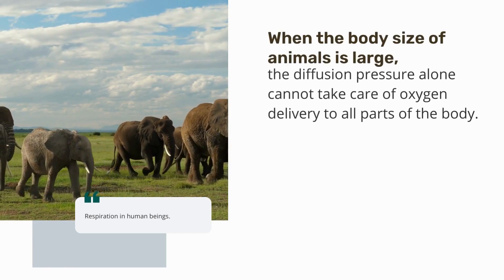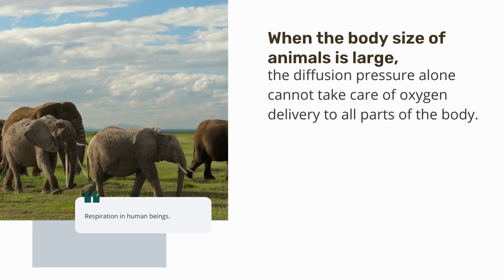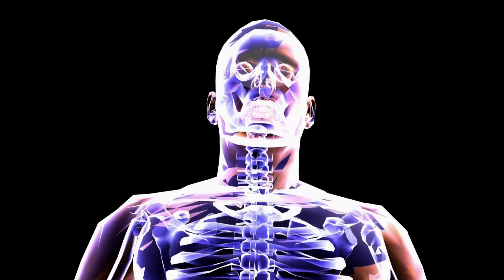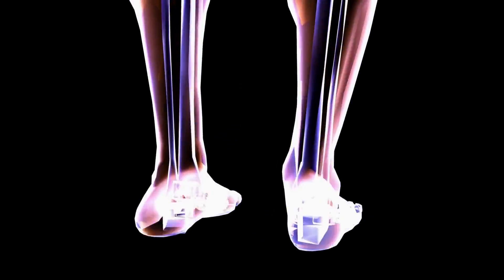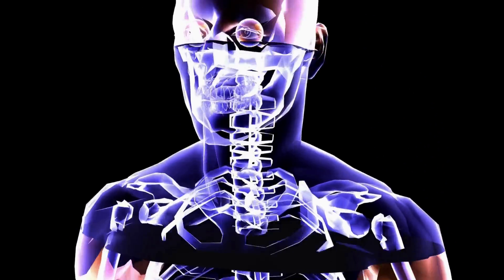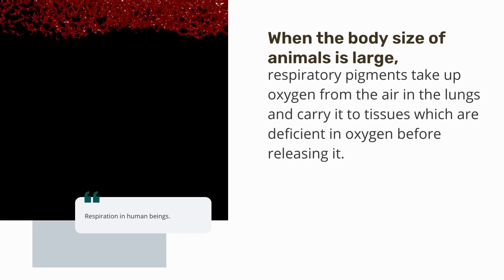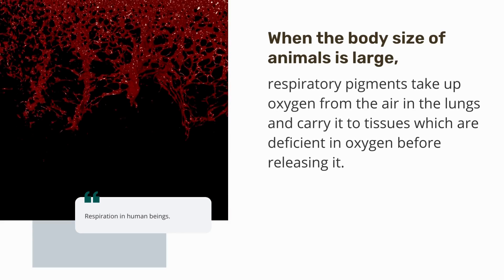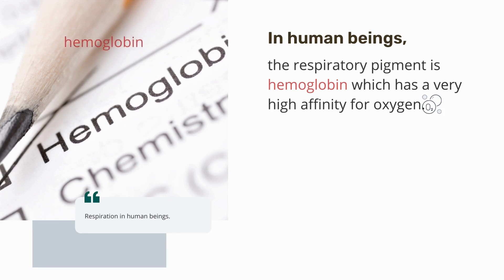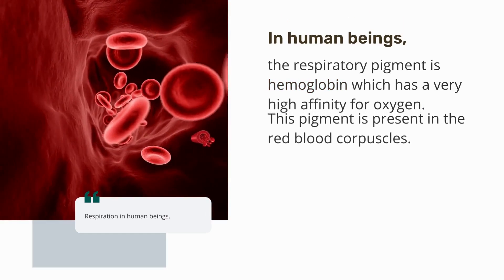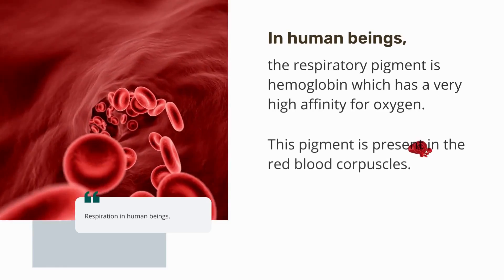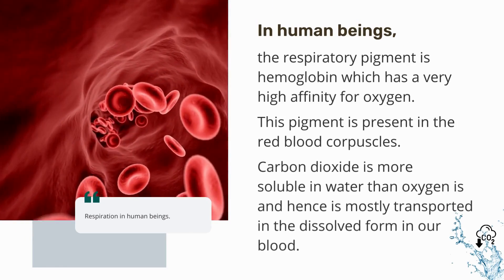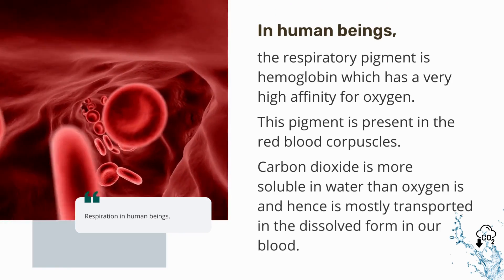When the body size of animals is large, diffusion pressure alone cannot deliver oxygen to all parts of the body. In humans, it is estimated that diffusion alone would take three years for an oxygen molecule to travel from the lungs to the toes. So instead, respiratory pigments take up oxygen from the lungs and carry it to tissues deficient in oxygen. In human beings, the respiratory pigment is hemoglobin, which has a very high affinity for oxygen, and is present in the red blood corpuscles. Carbon dioxide is more soluble in water than oxygen and is mostly transported in dissolved form in our blood.